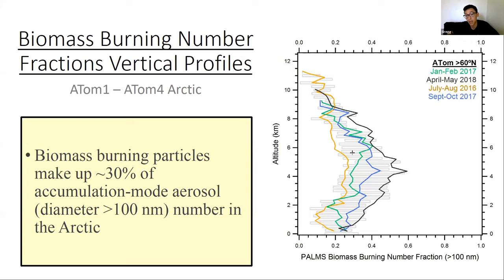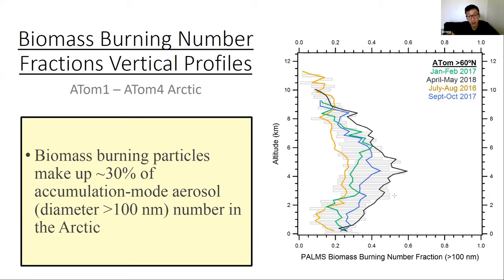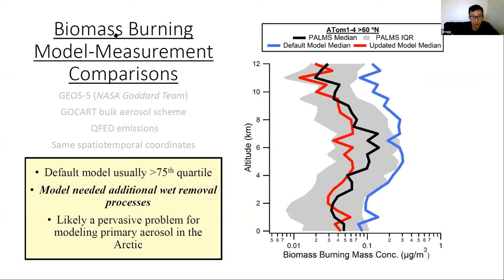The biomass burning number fraction tells you the influence of biomass burning on the aerosol in this region. The influence is relatively high — on average about 30% of the particles in the arctic are biomass burning. We do see seasonal variations: more in arctic spring, a little less in the summer pass. Between about 2 and 8 kilometers, the interquartile range shows 25 to 50% of particles are biomass burning, almost irrespective of season.